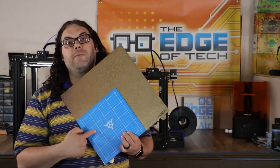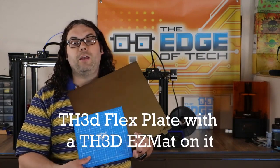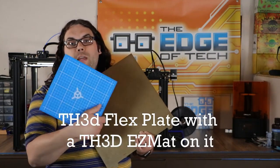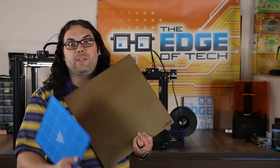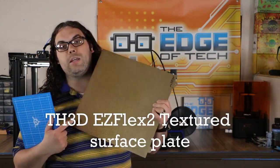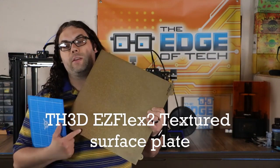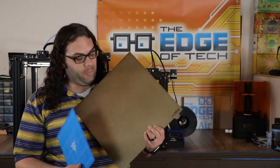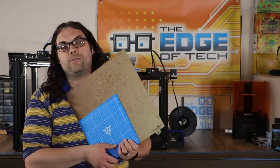I know you guys are going to ask, so this right here is a TH3D flex plate with a TH3D easy mat on it. I love this combination. And this right here is the TH3D easy flex 2 system for the Ender 5 Plus. Both of those links will be in the description below.